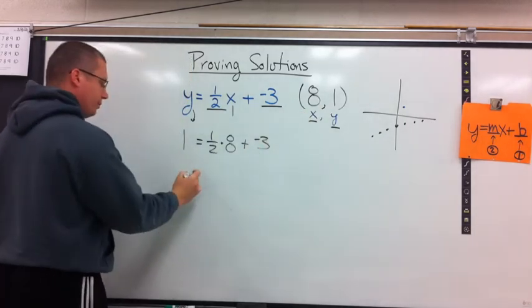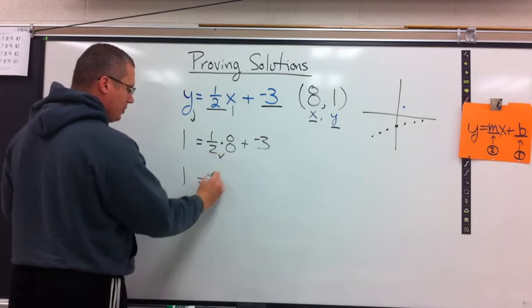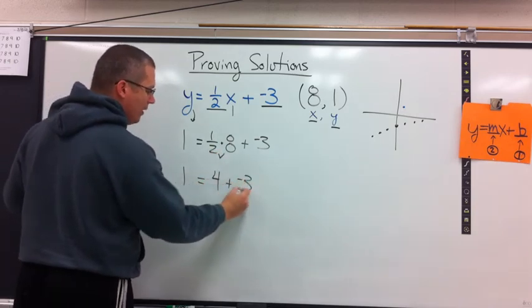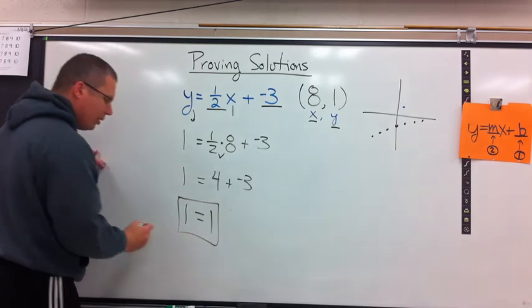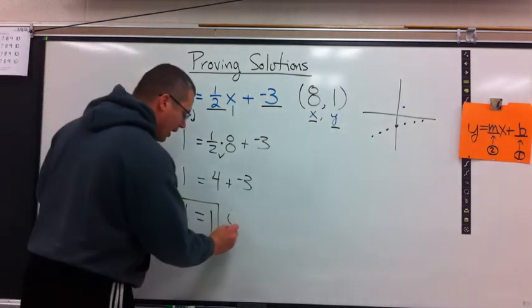Are these true? Order of operations. 1 half times 8 is 4. 4 plus negative 3, yes, is going to be equal to 1. Put a box around it. Is 1 equal to 1? The answer is yes.